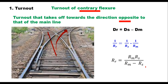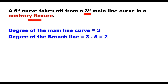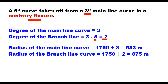Taking the same example: a 5-degree curve takes off from a 3-degree main line curve in contrary flexor. The degree of the main line curve is 3, and the degree of the branch line will be 3 minus 5. The negative sign indicates it is in the opposite direction of the main line. The radius of the branch line curve using formula 1750/d gives 875 m. That is how we find the resultant curve degree when a turnout takes off from a curved main line.